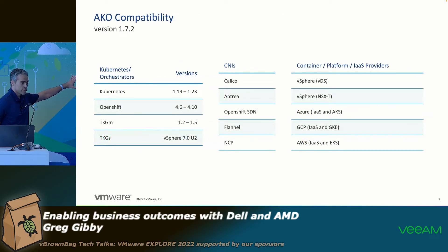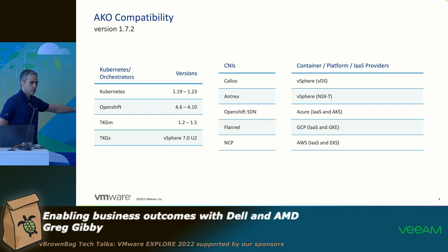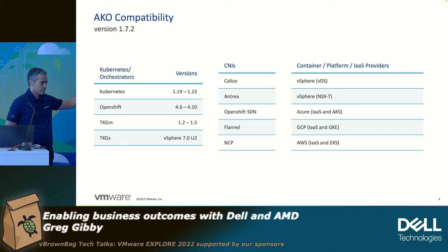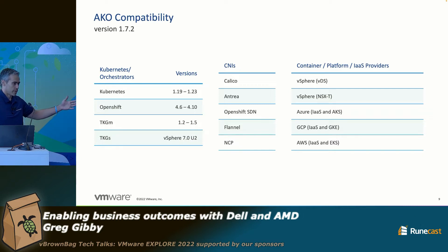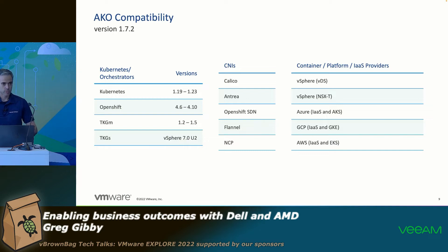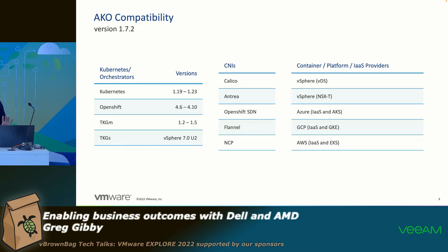This is the compatibility guide for the latest version of AKO. As you can see, we work with all Kubernetes flavors — it doesn't matter if it's OpenShift, Kubernetes, or Tanzu, and all CNIs. It can work on public clouds and private clouds. In public clouds you can even use their offerings such as AKS or GKE, or you can have vanilla Kubernetes. Avi is completely compatible with these offerings.